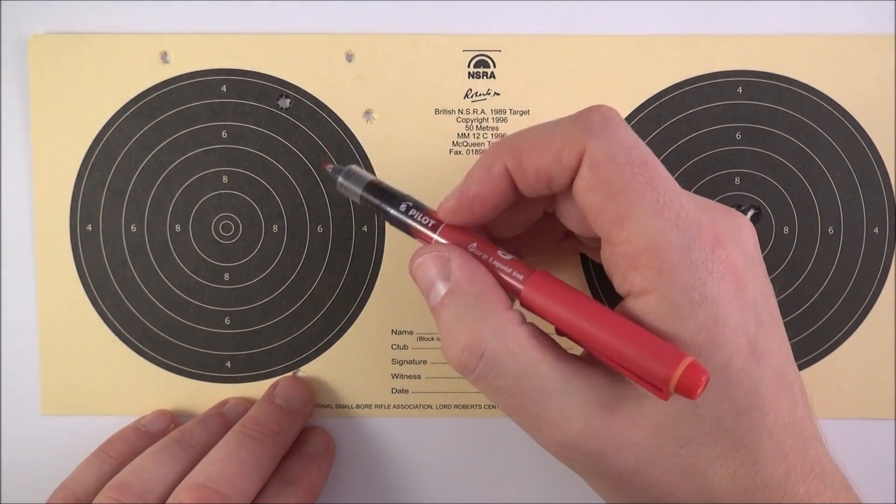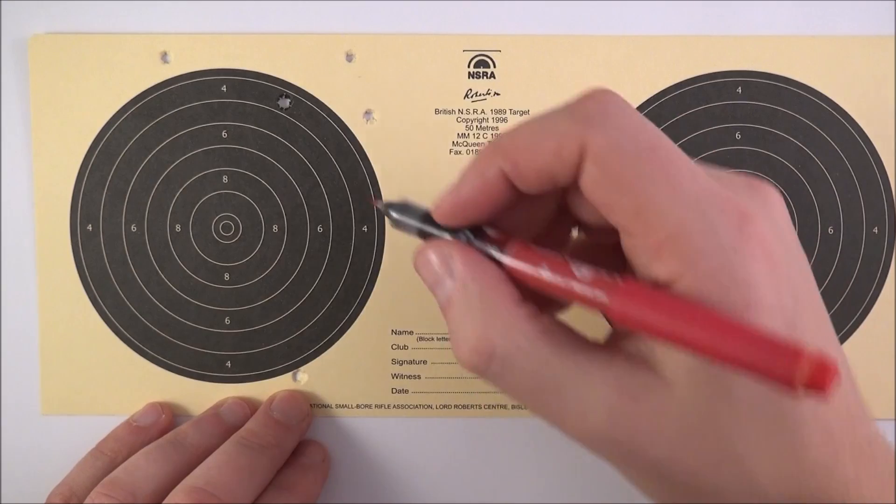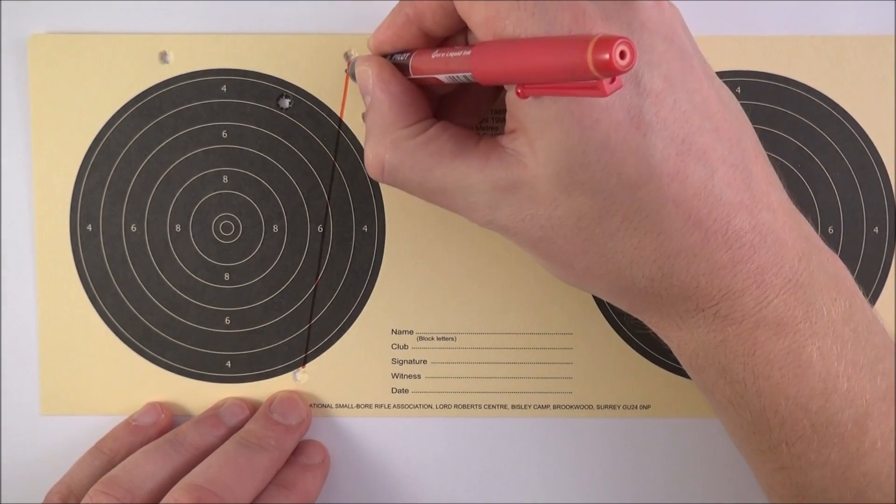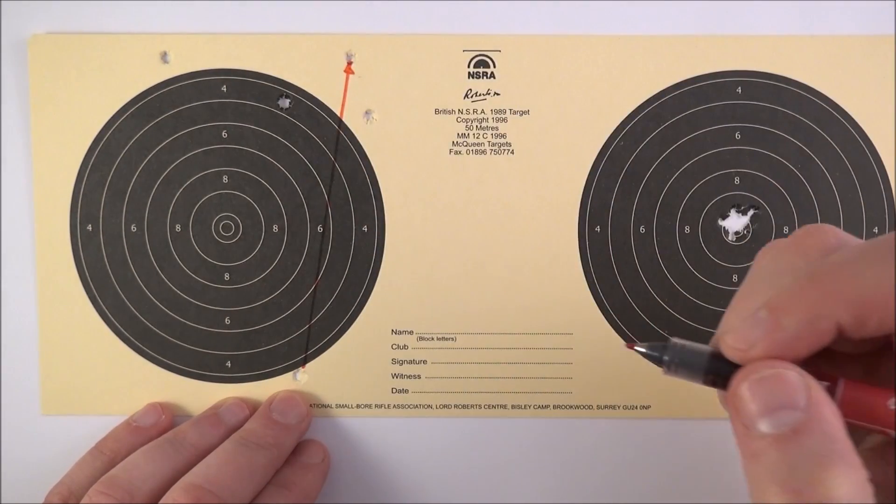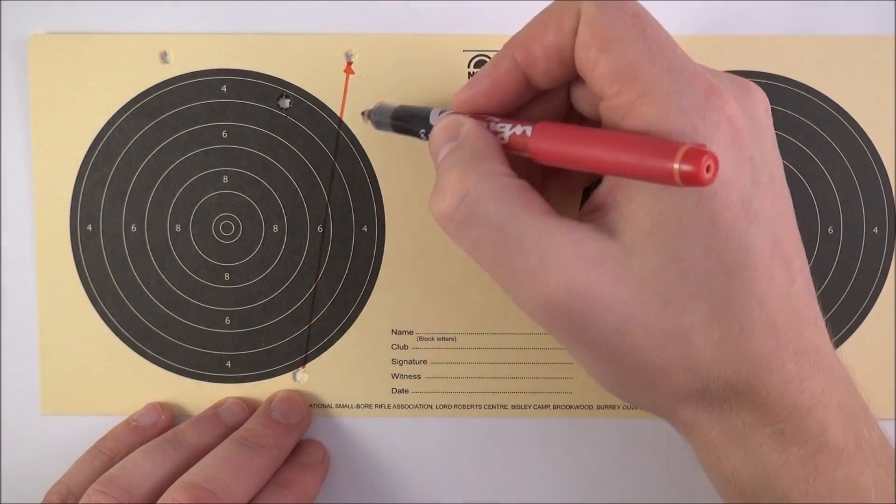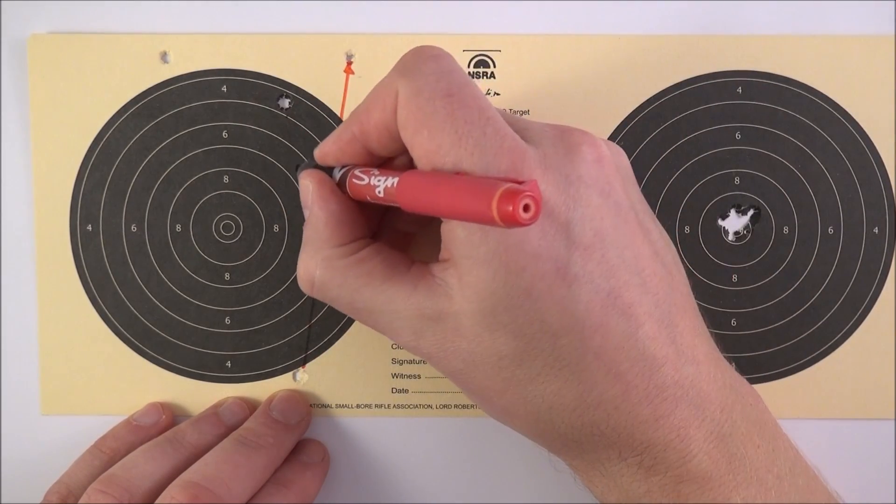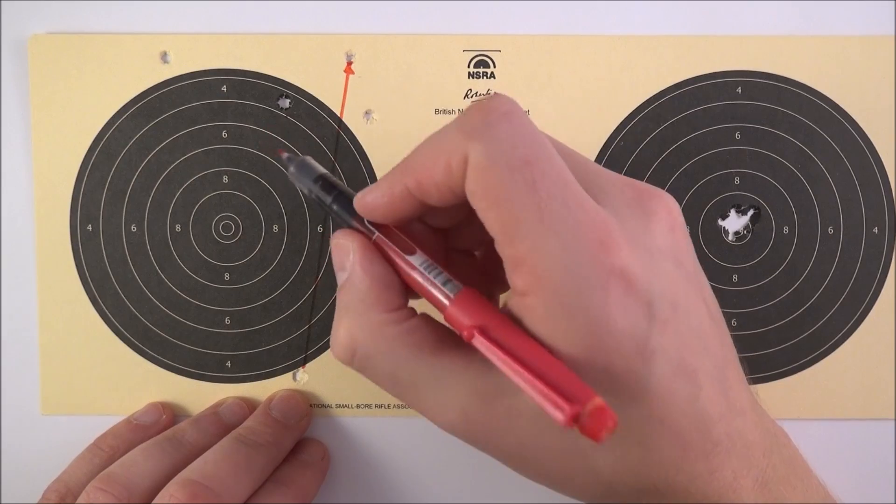Now following on from those definitions, on the left-hand here what we have is a very large group size, and this means the shooting isn't very precise. Also, the average position where these rounds land is quite a way away from the center of the target, so it's not accurate.